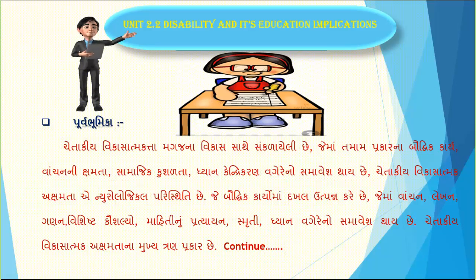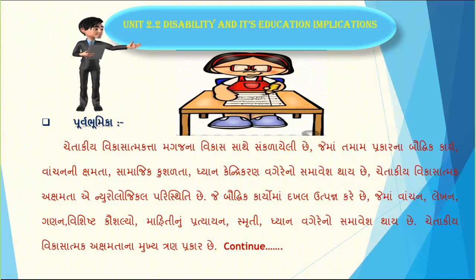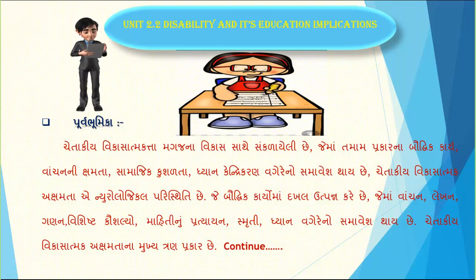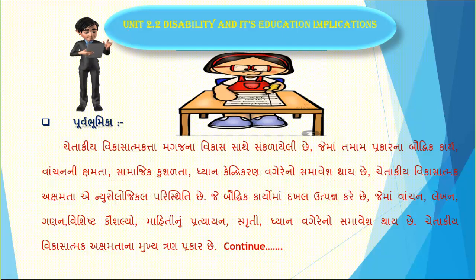ચેતાકીય વિકાસાત્મક અક્ષમતા એ ન્યૂરોલોજિકલ પરિસ્થિતિ છે જે જ્ઞાનાત્મક કાર્ય સાથે સંકળાયેલ છે. જેમાં તમામ પ્રકારનાં બૌધ્ધિક કાર્ય, વાંચન, સામાજિક કૌશળ, ધ્યાન કેન્દ્રીકરણ વગેરેનો સમાવેશ થાય છે. (Developmental neurological disability is a neurological condition related to cognitive functioning, including intellectual tasks, reading, social skills, and attention.)